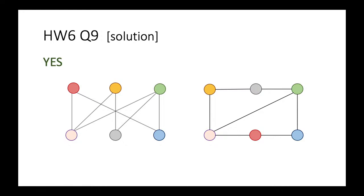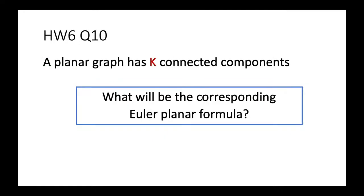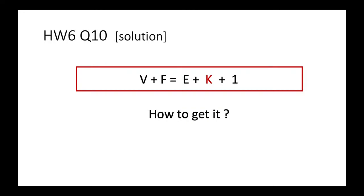Finally, for the last question: we have a planar graph with K connected components. We want to find the corresponding generalized Euler planar formula. The formula becomes: V + F = E + K + 1. In the original Euler planar formula, with one connected component, we have V + F = E + 2. Here with K connected components, we replace the 2 by K + 1.